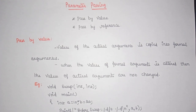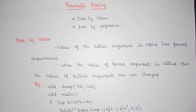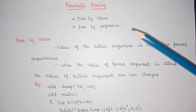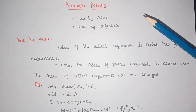Welcome back. In this class the discussion is on parameter passing. In the previous video we discussed about the categories of functions based on arguments and return value. Now coming to parameter passing — how we are going to pass the parameters to a function. There are two ways: one is pass by value and the second one is pass by reference.